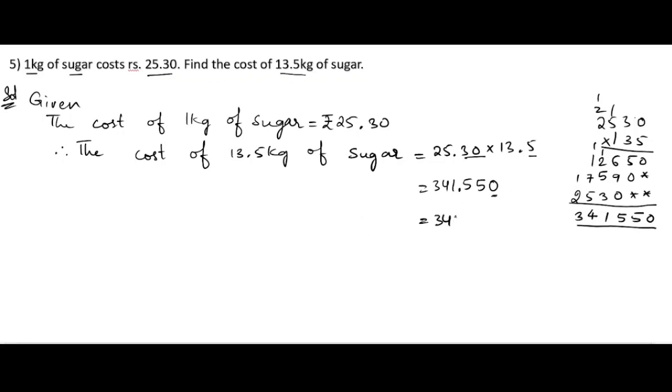And at the end we can write: Hence, the cost of 13.5 kg of sugar is equals to rupees 341.55.